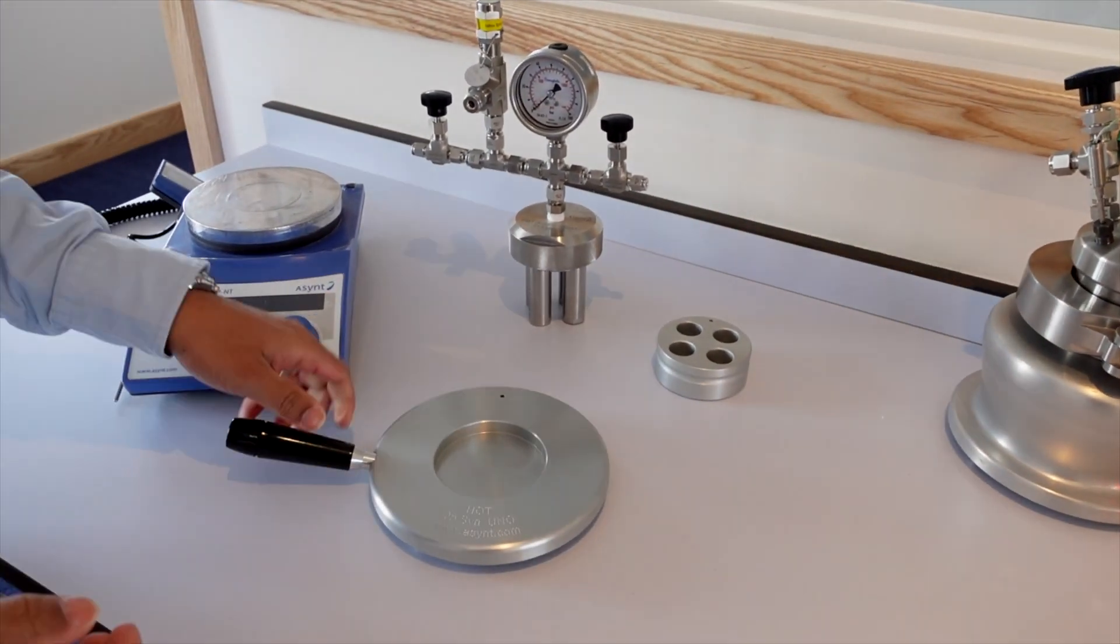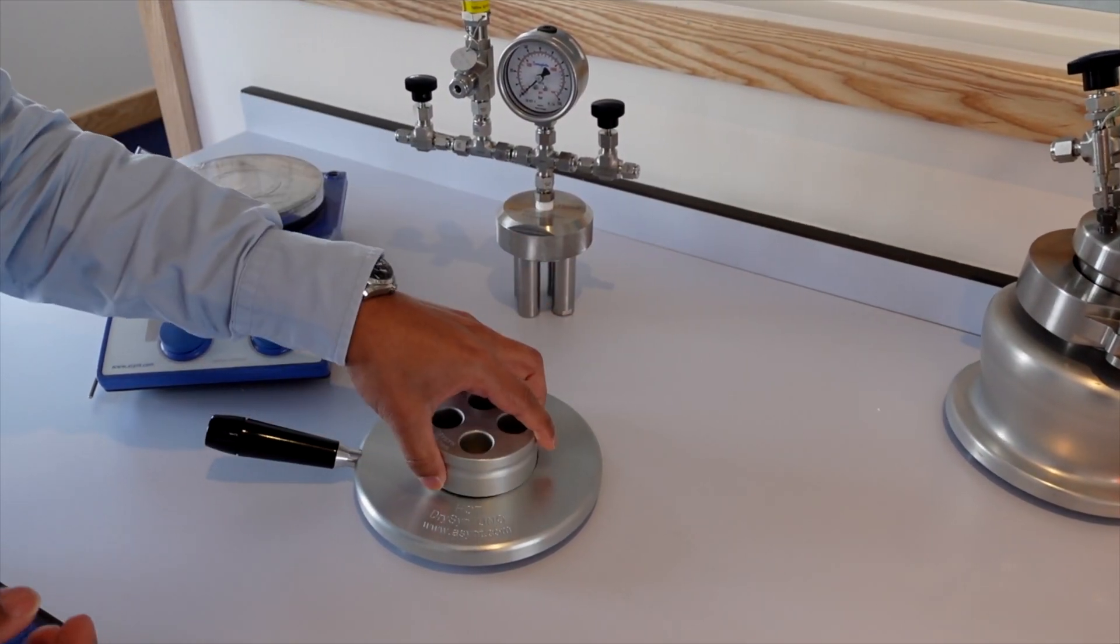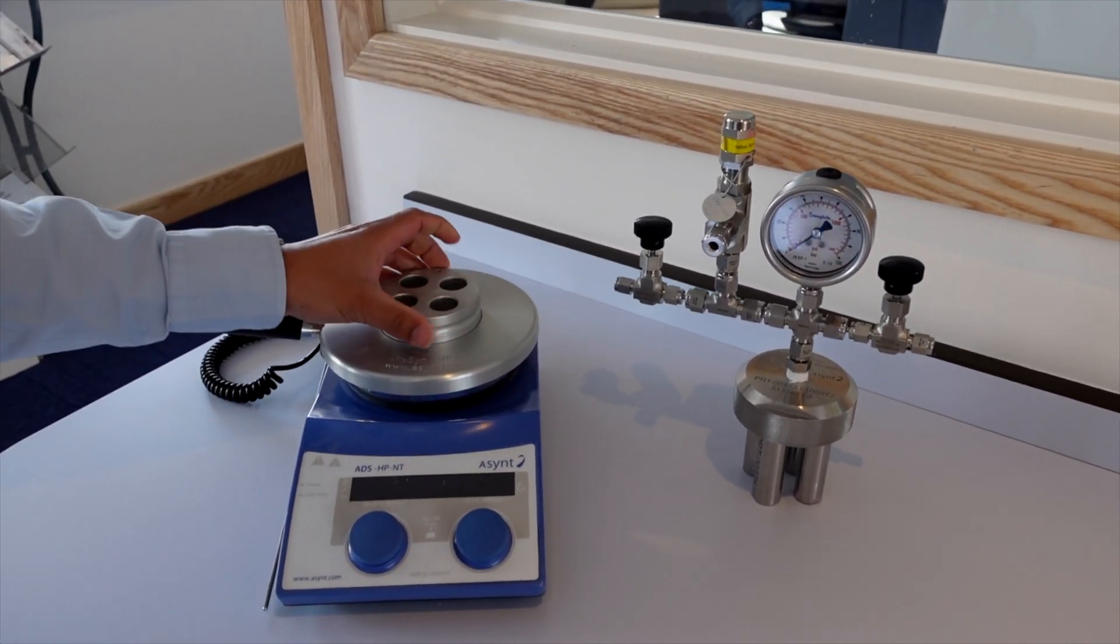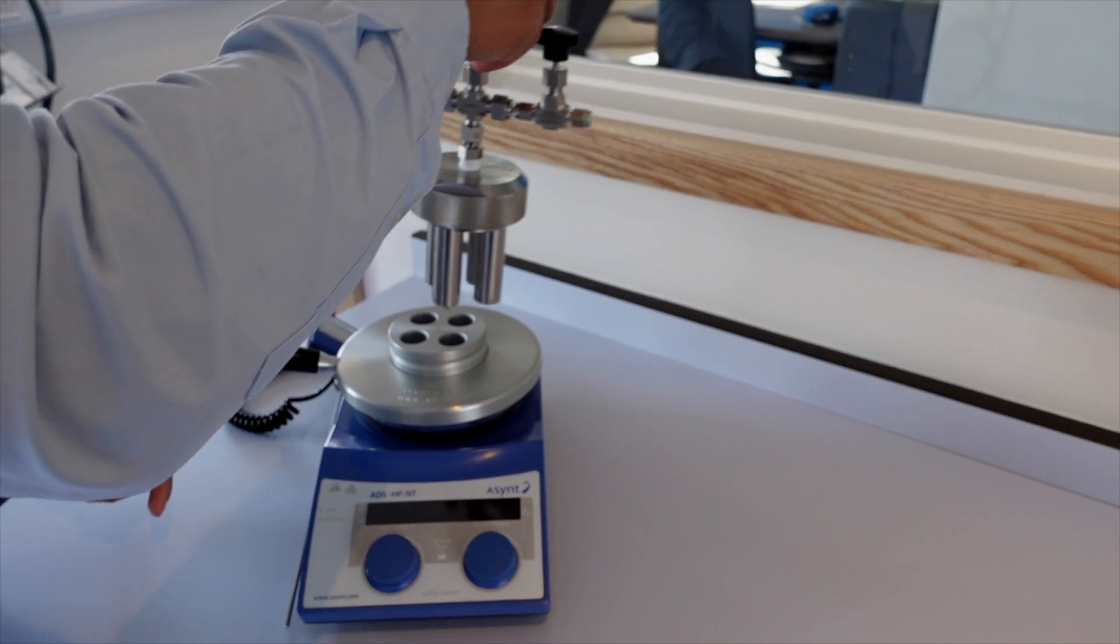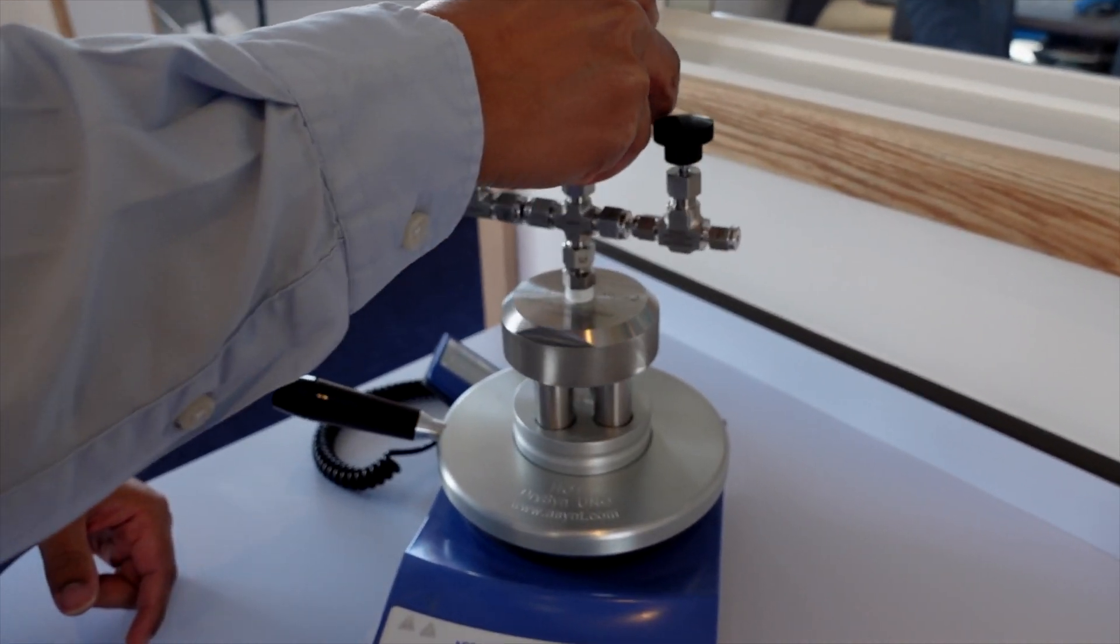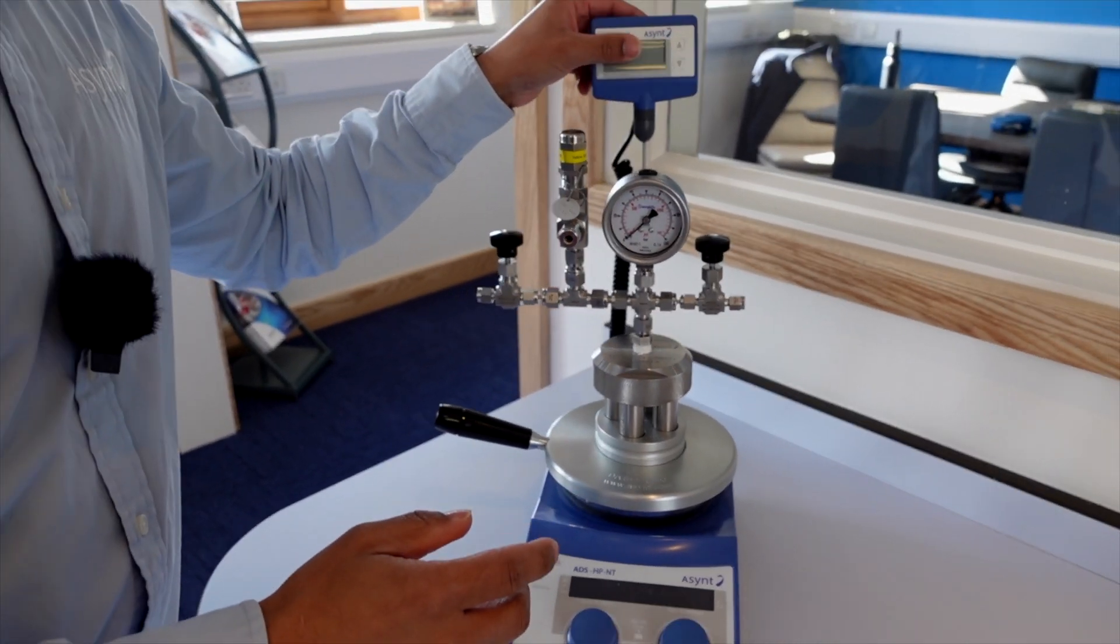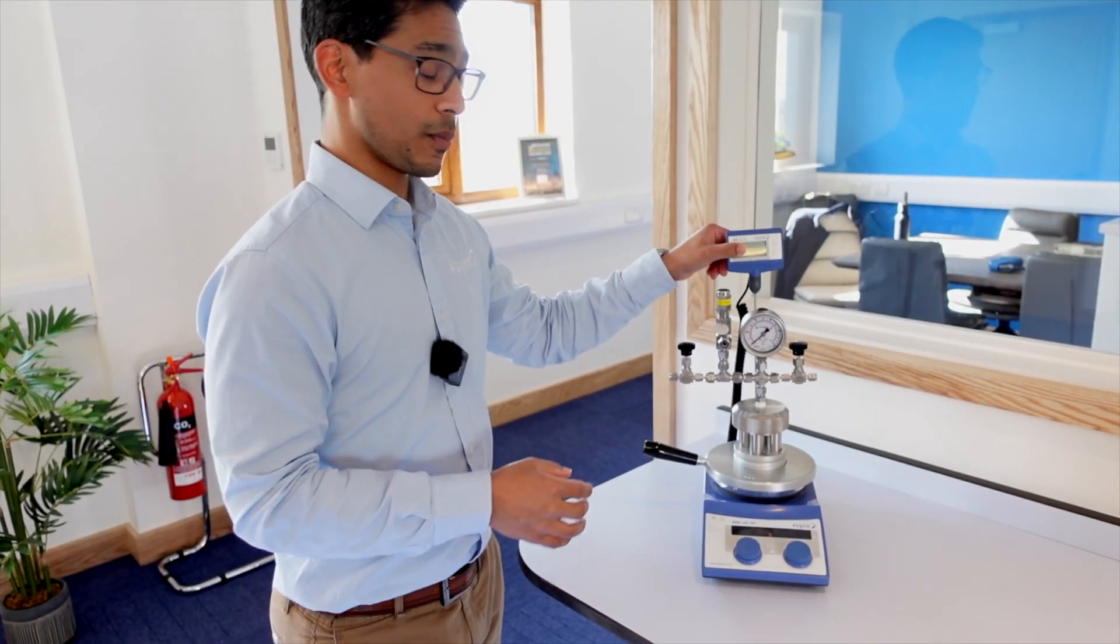You've got the base and the reaction vial insert, which when mounted on the hot plate stirrer, you can just easily slot the QuadraCell into. And with a hot plate thermocouple, you can control the block temperature.